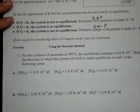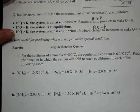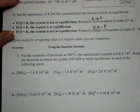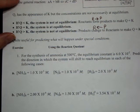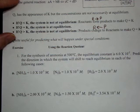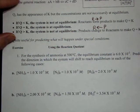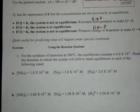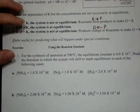What we use this for is predicting what's going to happen under different various conditions. For the synthesis of ammonia at 500 degrees C, the equilibrium constant is given to us. Predict the direction in which the system will shift to reach equilibrium in each of the following cases.